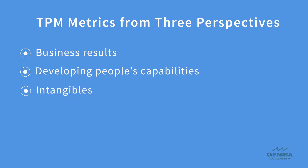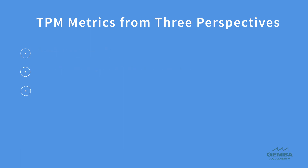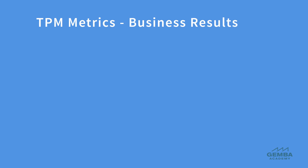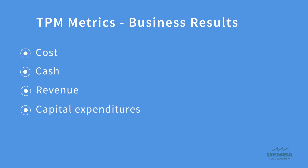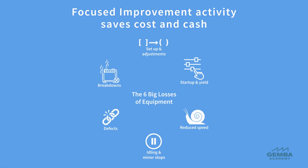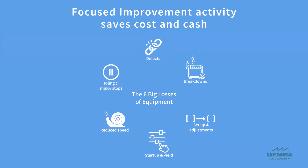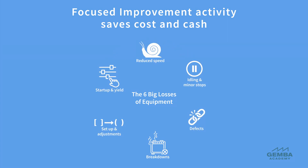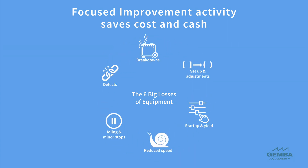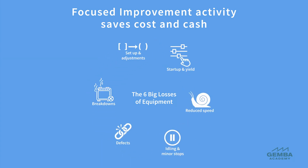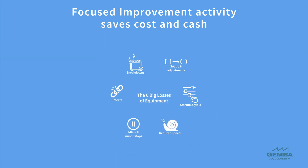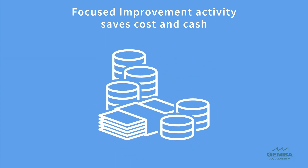We can further break down the business results achieved from TPM into four types: cost, cash, revenue, and capital expenditures. For example, focused improvement activity systematically reduces equipment losses, which reduces costs associated with breakdowns, quality defects, energy, materials, and labor. As a result of equipment changeover time reduction, it's possible to reduce production lot sizes, reduce work-in-process inventory, and free up cash.